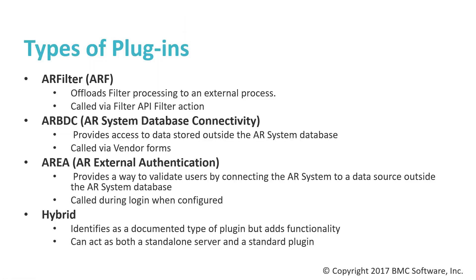Let's review the types of plugins. First, there are AR filter or ARF plugins, which offload filter processing to an external process — this is what the CAI plugin uses, called via a filter API filter action. ARDBC (AR system database connectivity) provides access to data stored outside the AR system database — not necessarily database-type data, could be a file — and these are called via vendor forms. Then we have AREA (AR external authentication) plugins, which provide a way to validate users by connecting the AR system to a data source outside the AR system database, called during login if configured to do so.